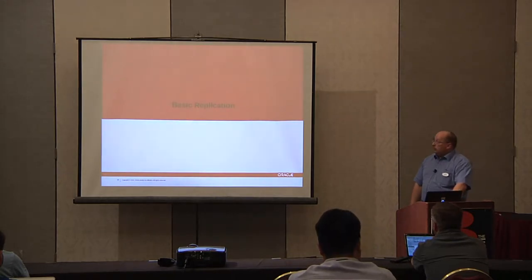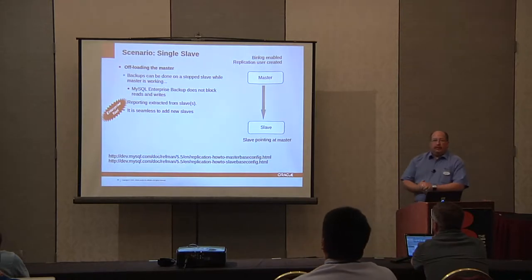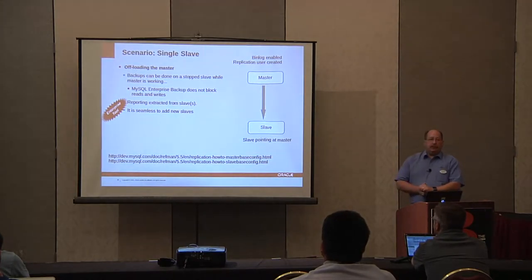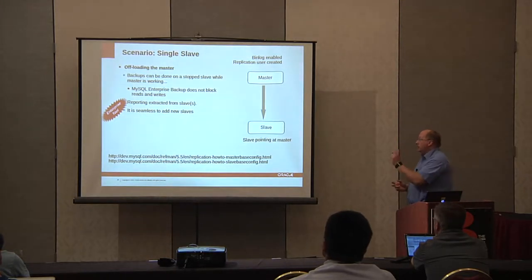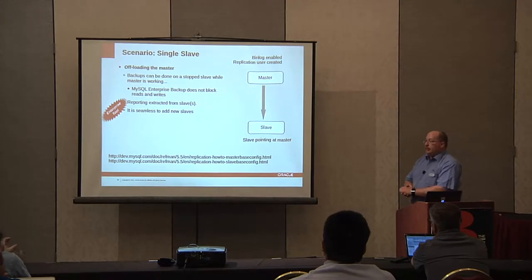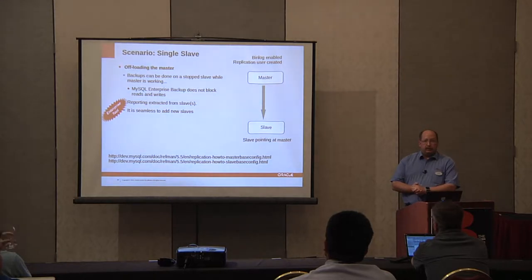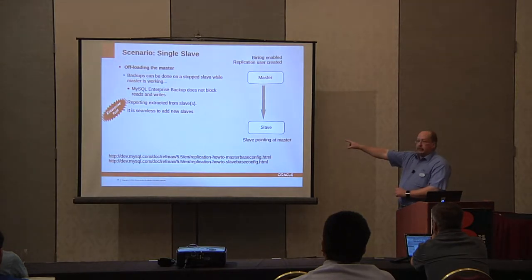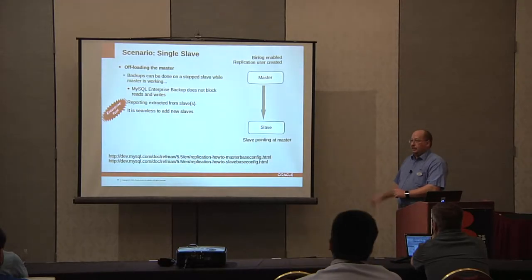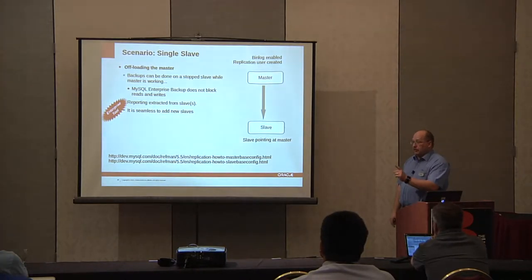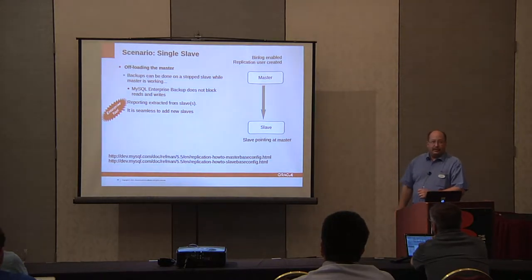In basic replication with one master and one slave, you might use it for offloading processing — simply splitting reads and writes: writes go to the master, reads go to the slave. You may want a master and single slave to do backups. If you need to never lock any tables for more than a few milliseconds, use replication: replicate to a slave, then at the appropriate time issue a LOCK TABLES on the slave, do your backup, record the relay log position, then start the slave again. You've done a backup online and never stopped the master or interrupted your applications.